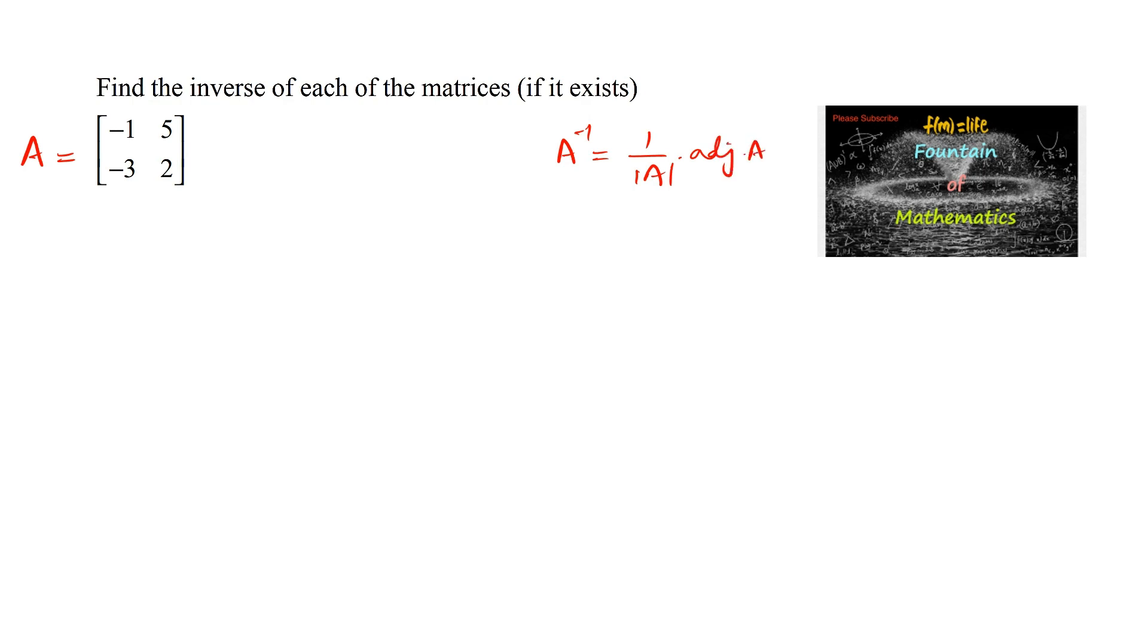A inverse exists when delta is not equal to 0. So let's find the determinant of the matrix.